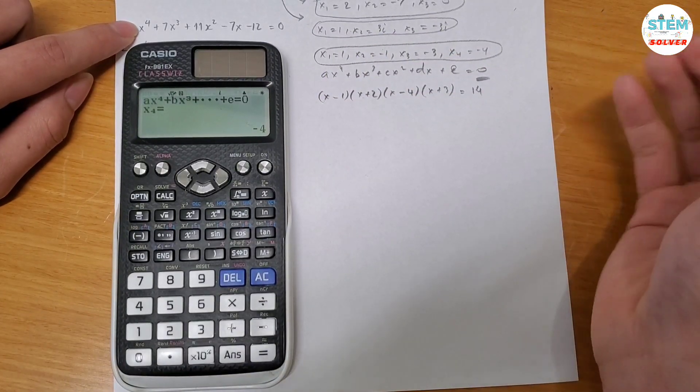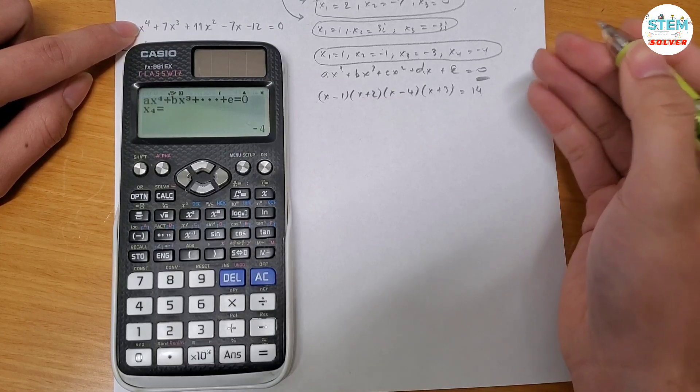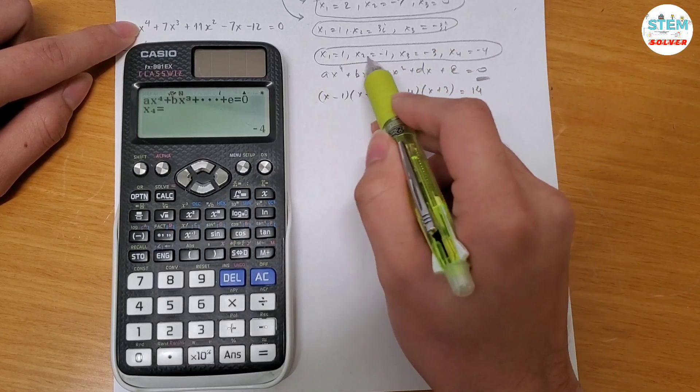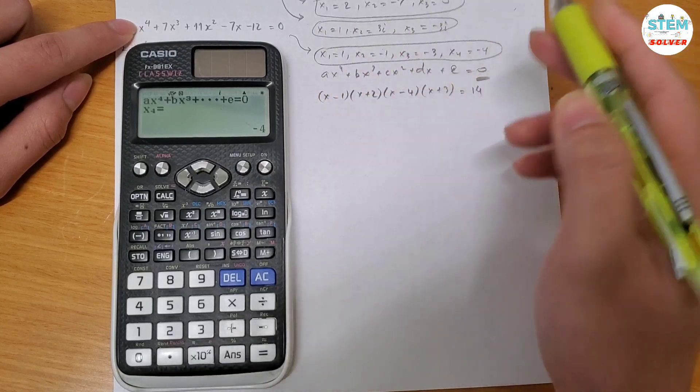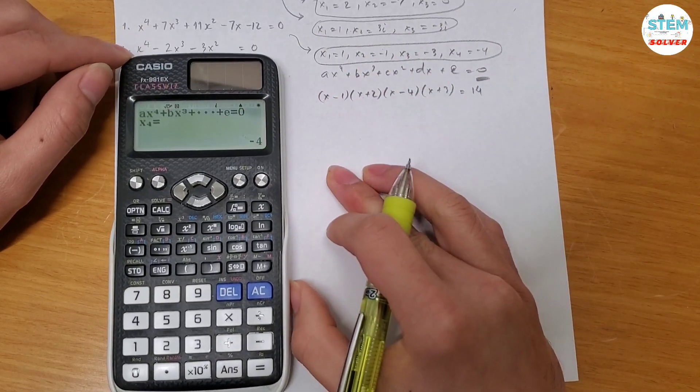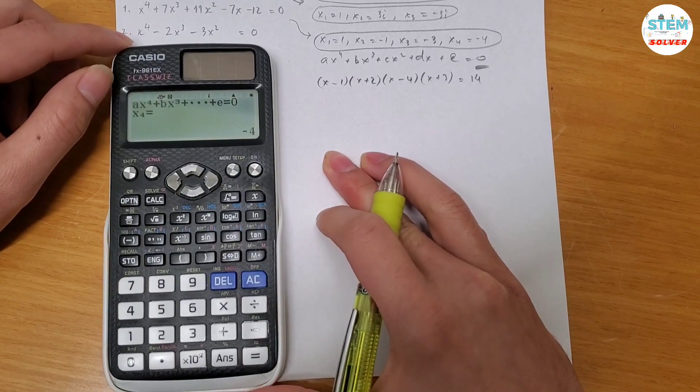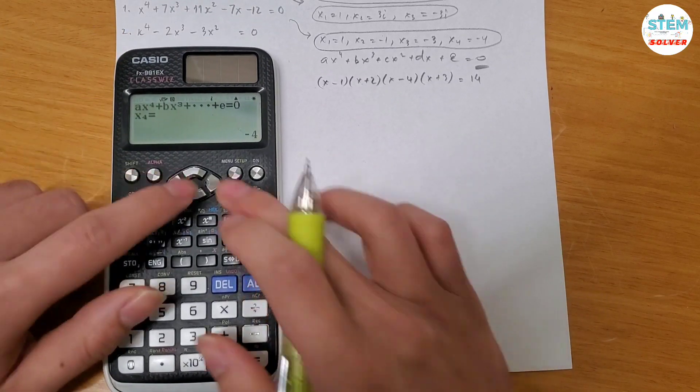So when you have a fourth degree polynomial, you should expect to get 4 roots for answers. Now let's go over another example.